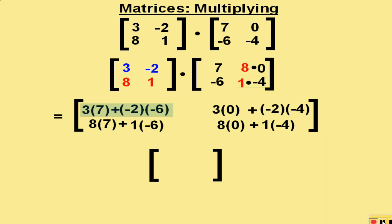3 times 7 plus negative 2 times negative 6 is 33. 3 times 0 plus negative 2 times negative 4 is 8. 8 times 7 plus 1 times negative 6 is 50. And 8 times 0 plus 1 times negative 4 is negative 4.